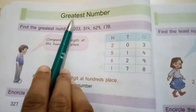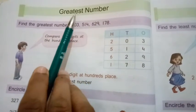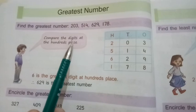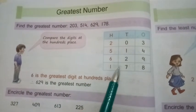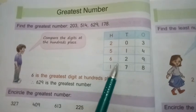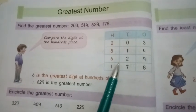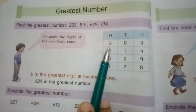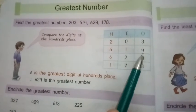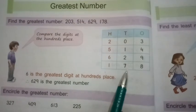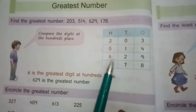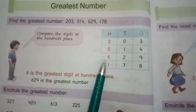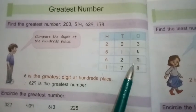The next topic is greatest number. In this, you learn how to find out the greatest or biggest number. You have 4 numbers. In order to find out the greatest number, we compare the hundreds place. The numbers are 203, 514, 629, and 178. 6 is the greatest digit at the hundreds place. Therefore, 629 is the greatest number.